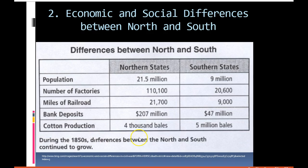We've talked about cotton production before, but in the North only 4,000 bales were produced per year, whereas in the South five million bales were produced during the 1850s. You can see the huge economic differences between the North and the South.